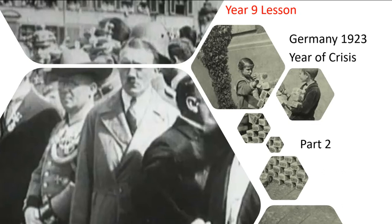This lesson is going to focus on the political fallout of the crisis in Germany in 1923, and it is going to look at the impact that this had on the Nazi party both in the short term and in the long term. So let's get started.